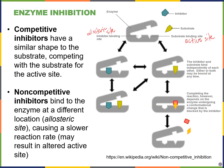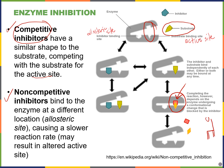Another way we can regulate enzymes is through inhibition. There are two types of inhibitors: competitive inhibitors and non-competitive inhibitors. Competitive inhibitors are what they sound like — they compete with the substrate for the active site. If I have a competitive inhibitor that looks very similar to the substrate and can bind to the same site, I can prevent the substrate from binding and the reaction from happening. It's a lot like playing musical chairs where there is one chair but two people competing for that same chair — only one person gets to sit.